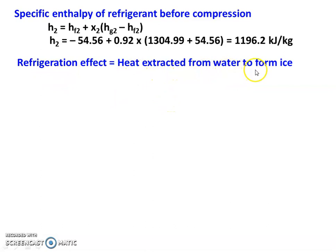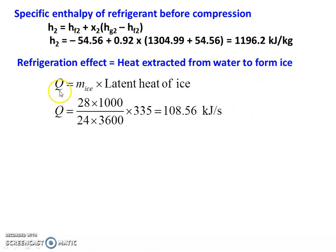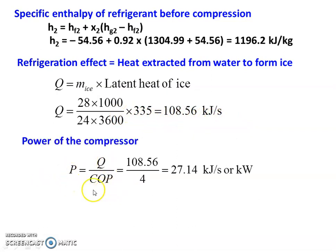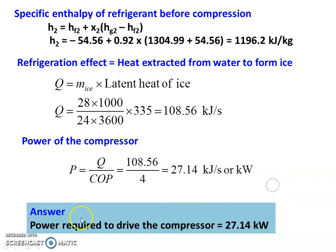The refrigeration effect equals heat extracted from water to form ice. Q equals mass of ice into latent heat of ice: 28 into 1000 divided by 24 into 3600, into 335 equals 108.5 kilojoules per second. Power of the compressor P equals Q divided by COP: 108.56 divided by 4 equals 27.14 kilojoules per second or kilowatt. The power required to drive the compressor is 27.14 kilowatt.